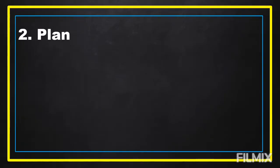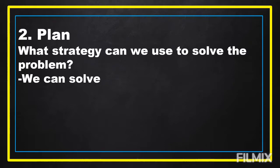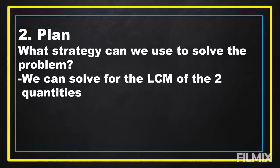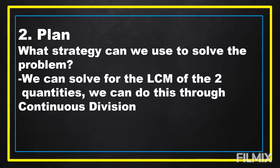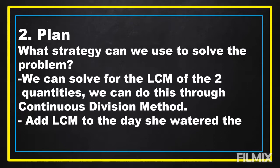The next step is to plan. What strategy can we use to solve the problem? In our problem, we can solve for the LCM, or the least common multiple, of the two quantities. We can do this through continuous division. After we get the LCM, we're going to add it to the day she watered the flowers together.